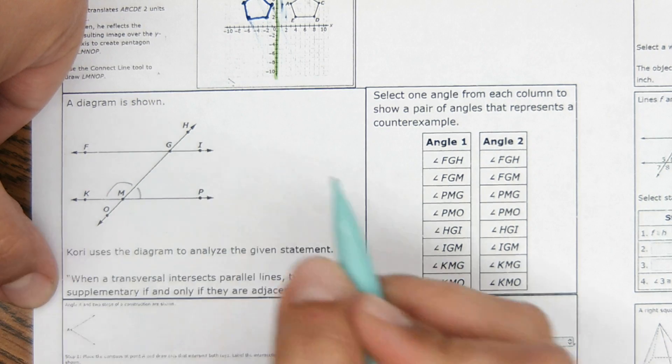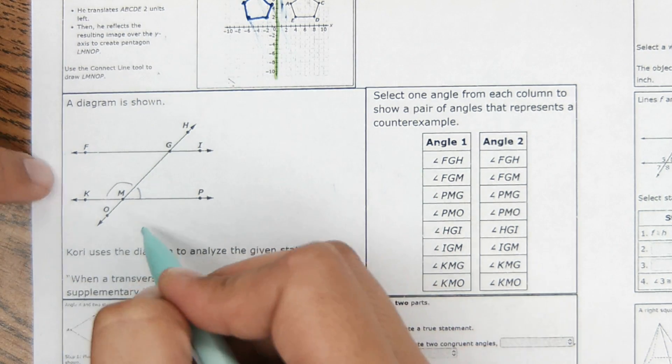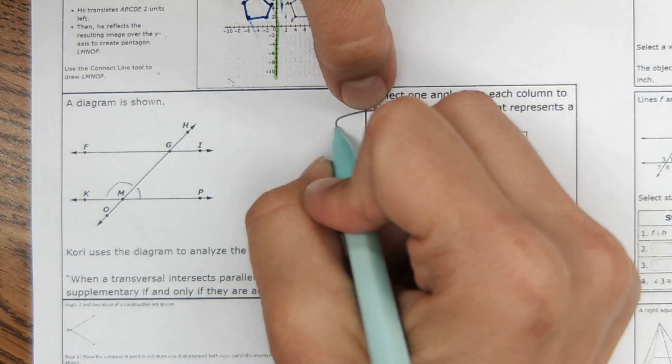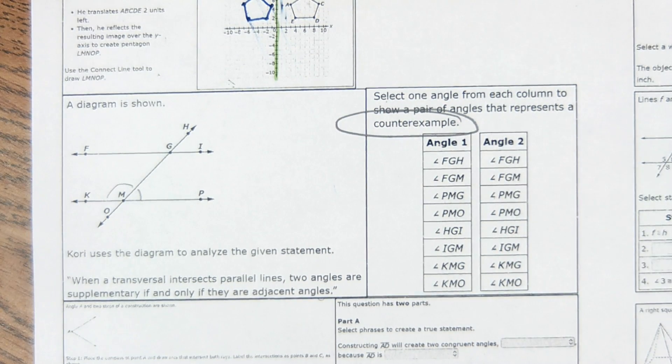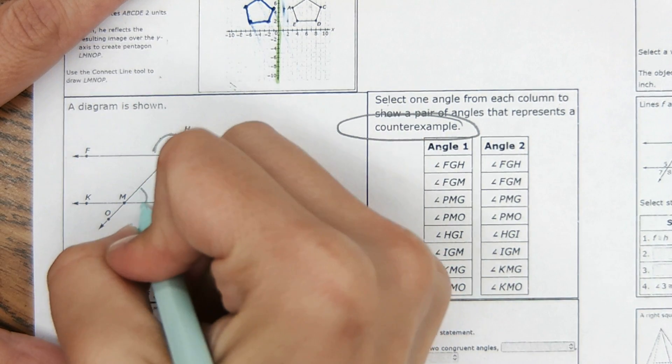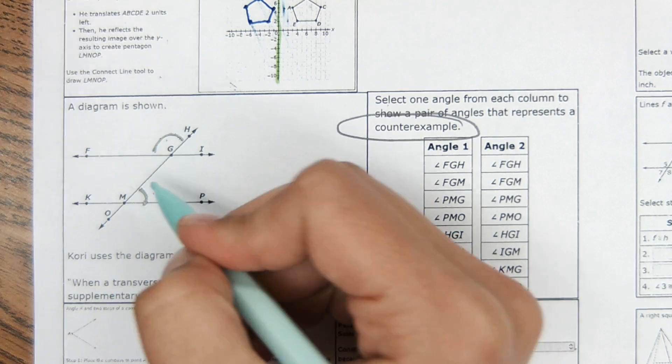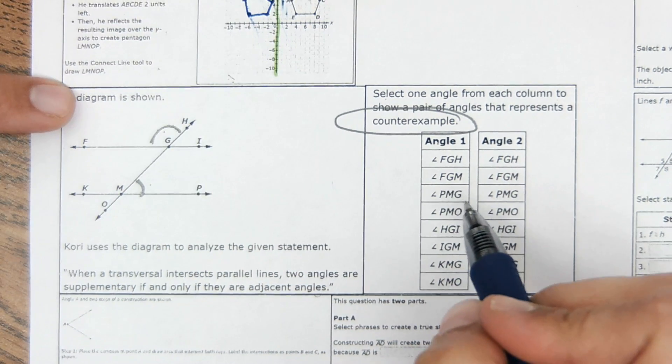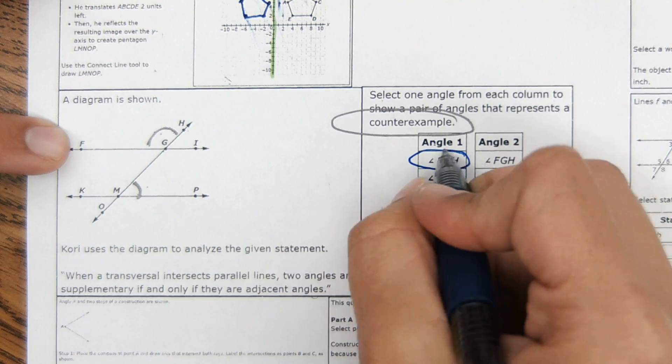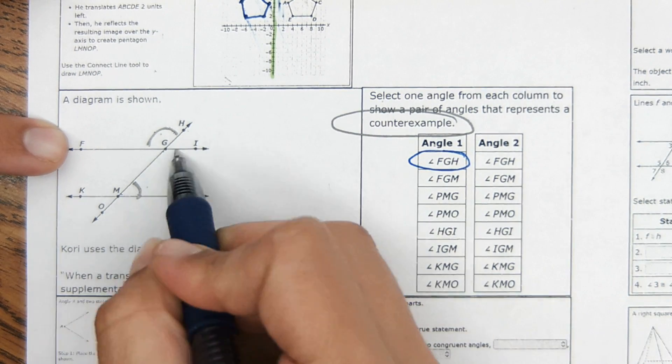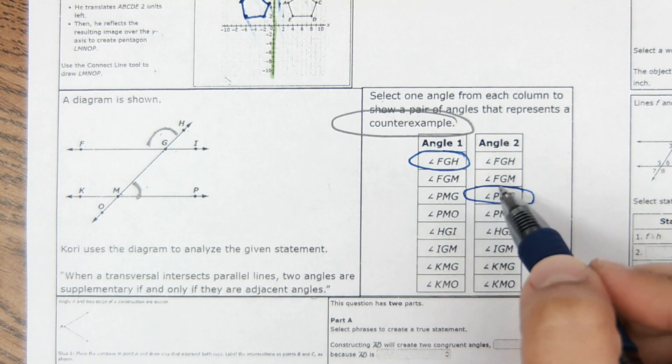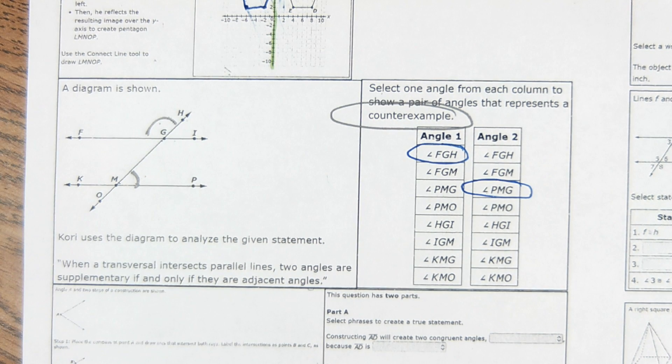Well, two angles that are adjacent are supplementary, but that wouldn't be the only time they're supplementary, so I just have that in the back of my mind. And then over here it says select one angle from each column to show a pair of angles that represents a counter example to this. So in order for them to be supplementary, they don't necessarily have to be adjacent. A counter example of that would be like this angle and this angle. These two angles would be supplementary and they're not adjacent. So over here, it wants you to just choose two angles that are supplementary but not adjacent. So FGH and GMP or PMG. And this would be a counter example. Of course, there are more options that you could choose. This is just one example of a correct answer, but there are many correct answers.